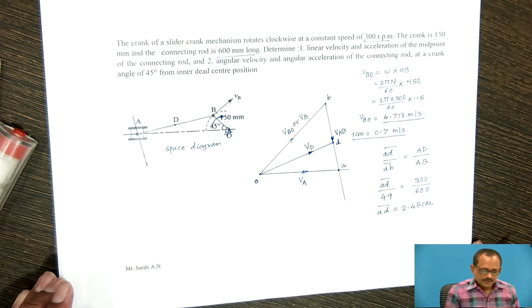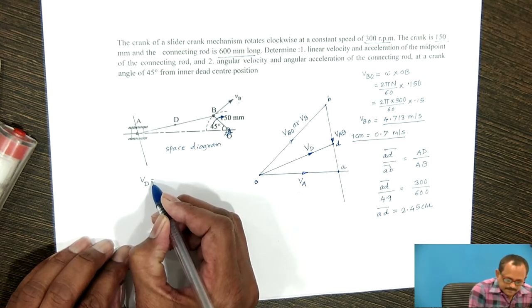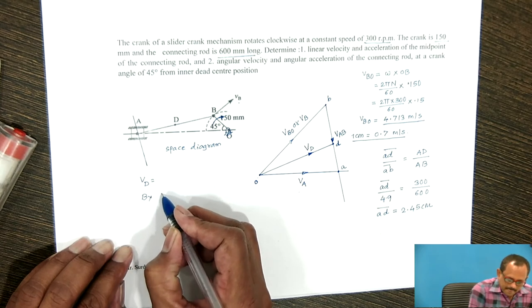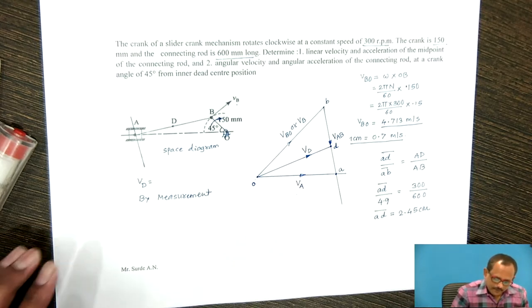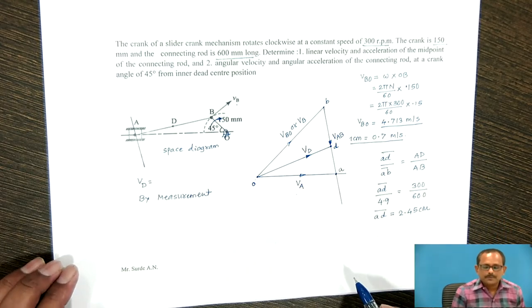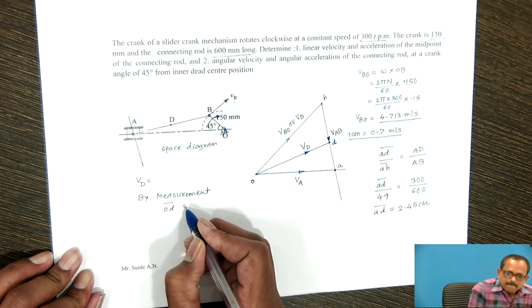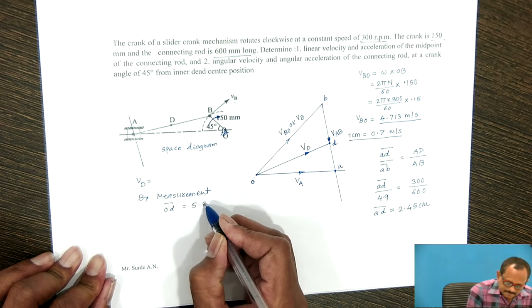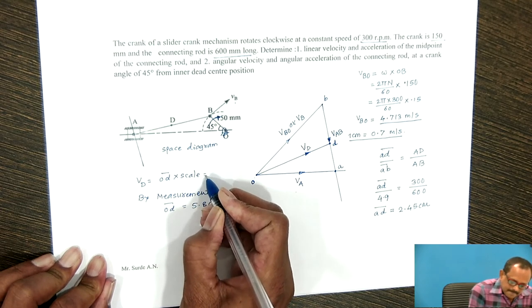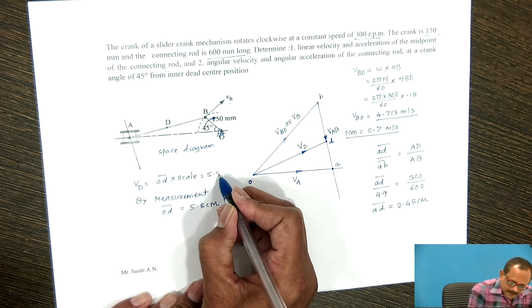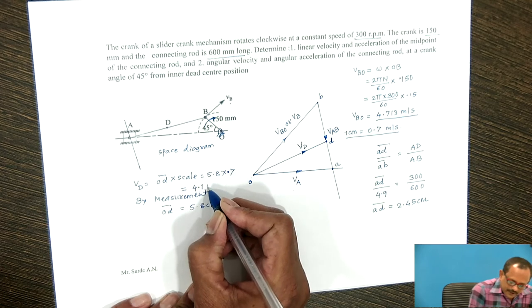Vector OD represents the velocity of point D. What is asked is the linear velocity of the midpoint of the connecting rod. By measurement, the vector length OD equals 5.8 centimeters. Velocity of D equals vector OD multiplied by the scale: 5.8 × 0.7, which gives the velocity of point D equal to 4.1 meters per second.